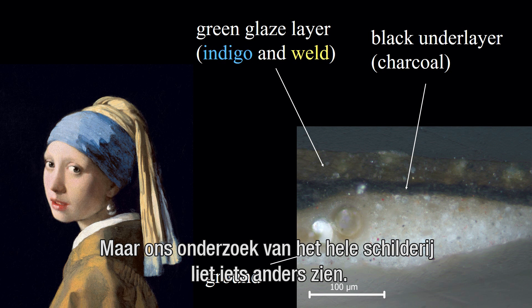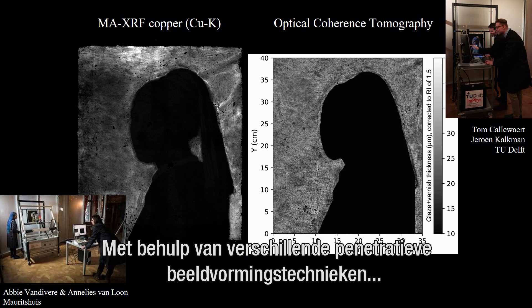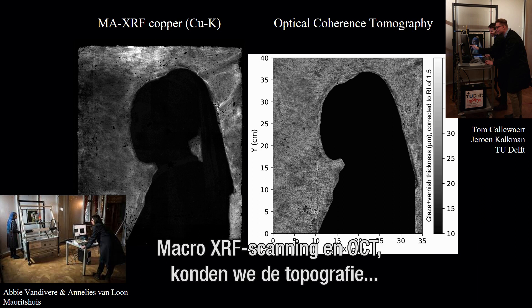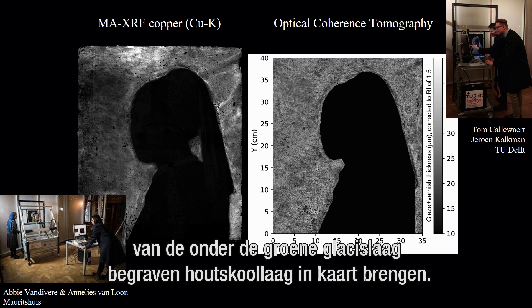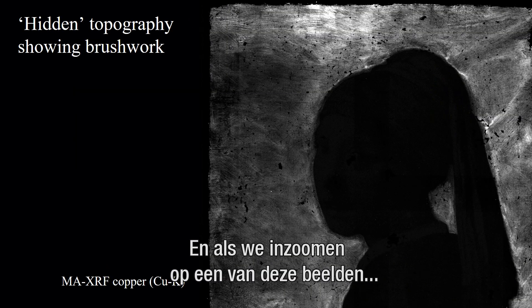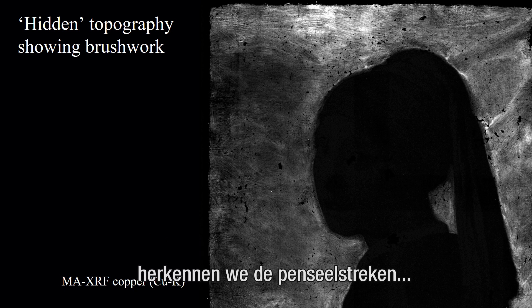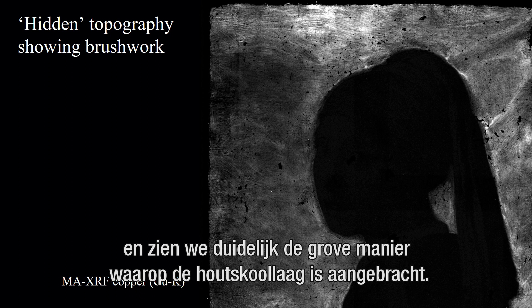In this microscopic cross-section, the black layer appears to be flat and thin, but our examination of the entire painting showed otherwise. Using different penetrative imaging techniques — macro XRF scanning and optical coherence tomography — we were able to chart the topography of the charcoal layer buried under the green glaze layer. When zooming into one of these images, we recognize the brushstrokes and clearly see the coarse way in which the charcoal layer was applied.